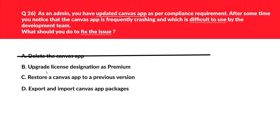Let's look at option B: upgrade license designation to premium. Upgrading the license designation to premium can help when using an HTTP connector in a flow connected to an app not recognized by the app's license designation. This will not help fix the issue described in the scenario, which is related to updating. Hence, we'll mark this as wrong.